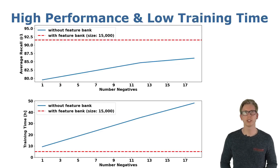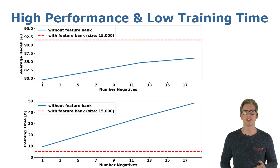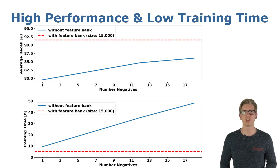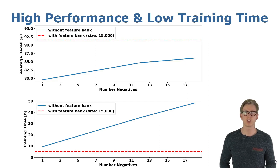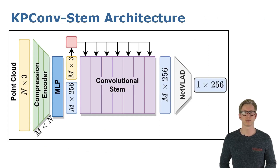We can see in blue the performance for the classical method mining up to 18 negatives. Compared to this, in red we can see the results for the feature bank with 15,000 descriptors. The feature bank not only increases the performance even further but also reduces the training time substantially — it is even faster than using only one negative.